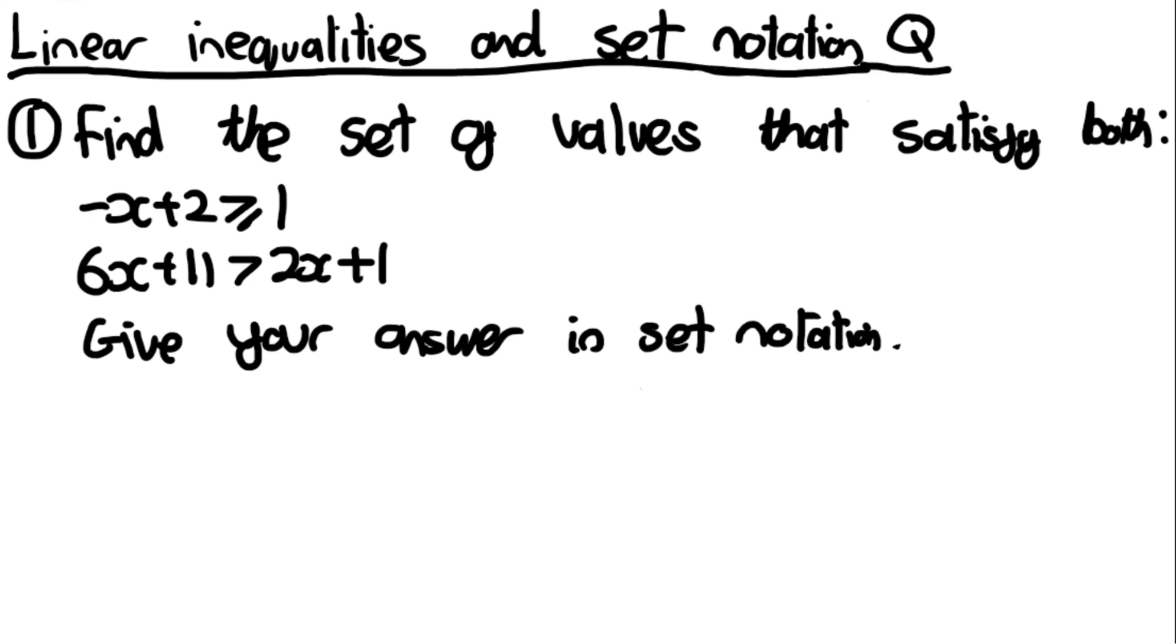Okay, here's a question on linear inequalities in set notation. So pause the video, have a go and I'll go through the answer in about 5 seconds. Okay, so a couple of you may have noticed that there is no and or or here. A few of you might be a bit confused about how you treat this question then. Is it in the and variety or the or variety? Well, the key is this both up here.